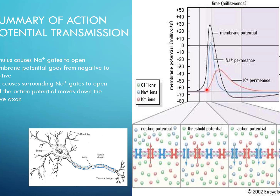Right at the height of the sodium influx, potassium gates open and sodium gates close. Potassium rushes out, returning the cell back to a negative charge. Then the sodium-potassium pump takes over, pumping sodium out and potassium in, returning the ions to their regular concentrations.